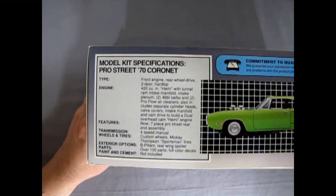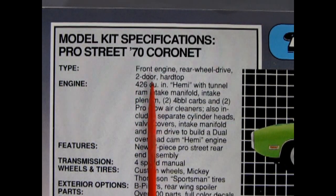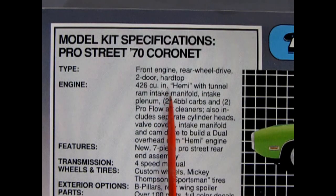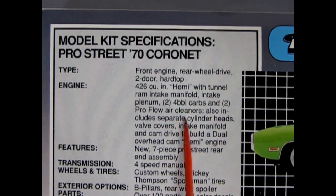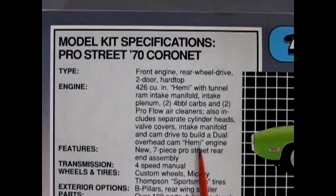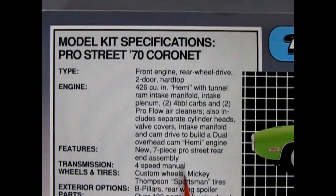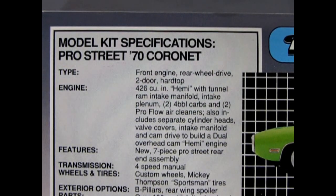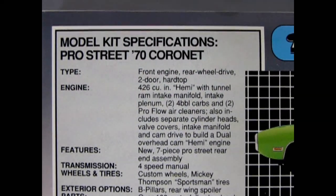So right here of course if we zoom in you can see the model kit specifications for the Pro Street 70 Coronet. The type is a front engine rear-wheel drive two-door hardtop. Can you dig it? Engine 426 cubic inch Hemi with tunnel ram intake manifold intake plenum, two four-barrel carburetors, and two Pro Flow air cleaners. Also includes separate cylinder heads, valve covers, intake manifold, and cam drive to build the dual overhead cam Hemi engine. Features new seven-piece Pro Street rear-end assembly, transmission four-speed manual, wheels and tires, custom wheels, Mickey Thompson sportsman tires, exterior options, B-pillars, rear wing spoiler, parts over 100 groovy parts, full-colored decals, paint and cement are not included.